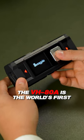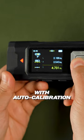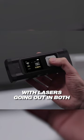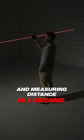The VH-80A is the world's first bi-directional laser distance measurer with auto calibration for maximum accuracy. With lasers going out in both directions with a single click, it measures distance in one second.